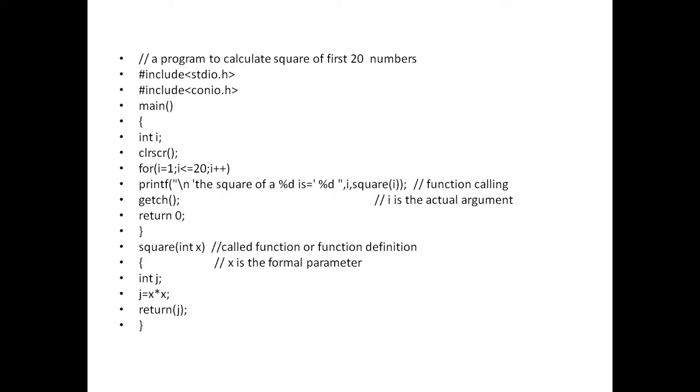Next, getch, return 0, curly braces close. This is the main program. After that, the function definition. Here square(int x)—this is the called function or the function definition. Here x is the formal parameter, and you should remember the number of actual arguments and the number of formal parameters should be same. Here i is the actual argument, here x is the formal parameter.